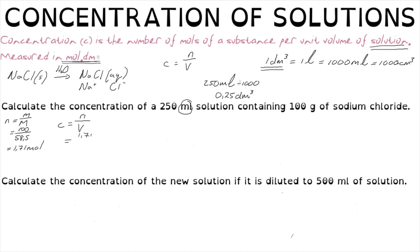We can now say the concentration of the solution is 1.71 moles divided by 0.25 cubic decimetres, which gives a concentration of 6.84 moles per cubic decimetre. This tells us that if we had one litre (one cubic decimetre) of solution it would contain 6.84 moles. Since we only have a quarter of a litre, we have only 1.71 moles.